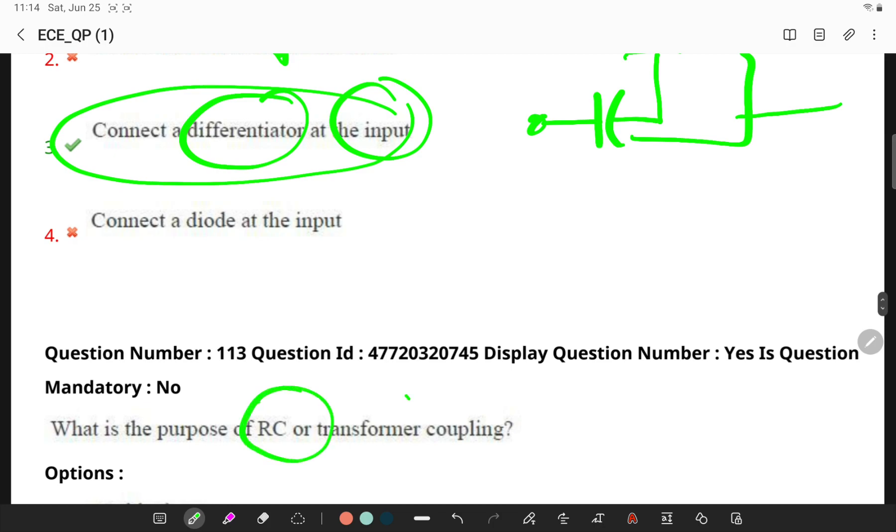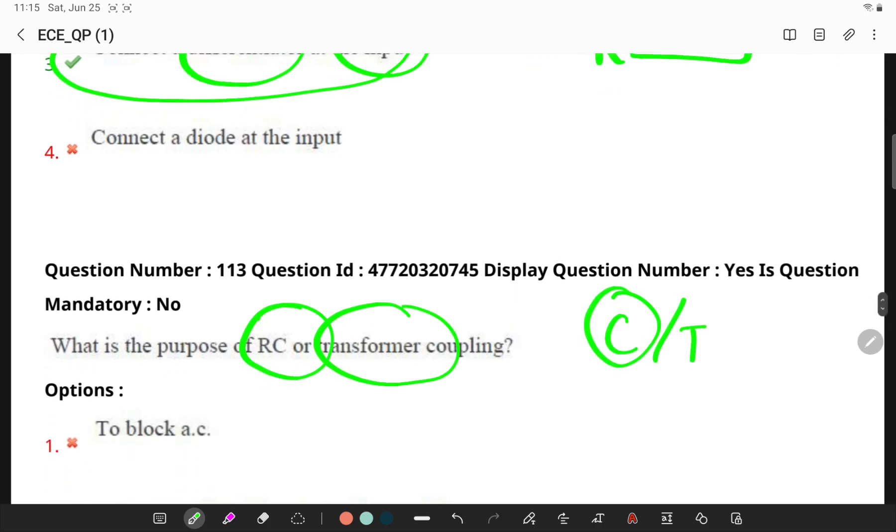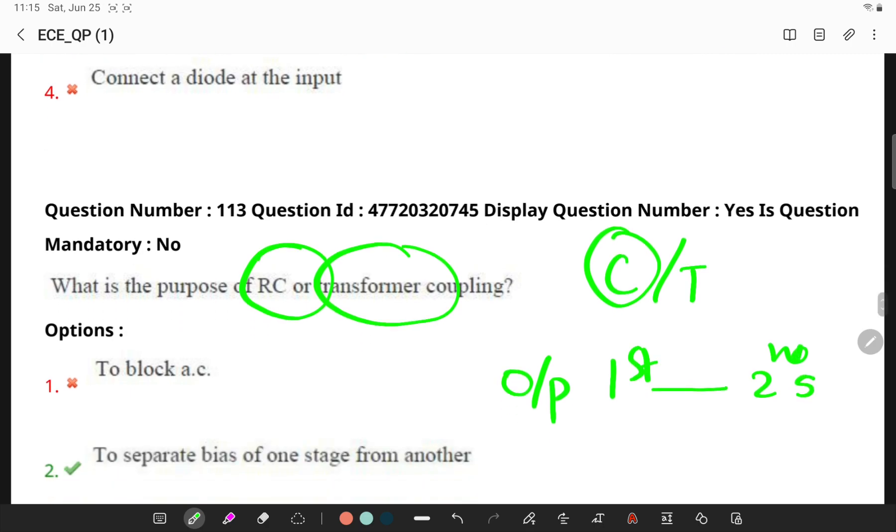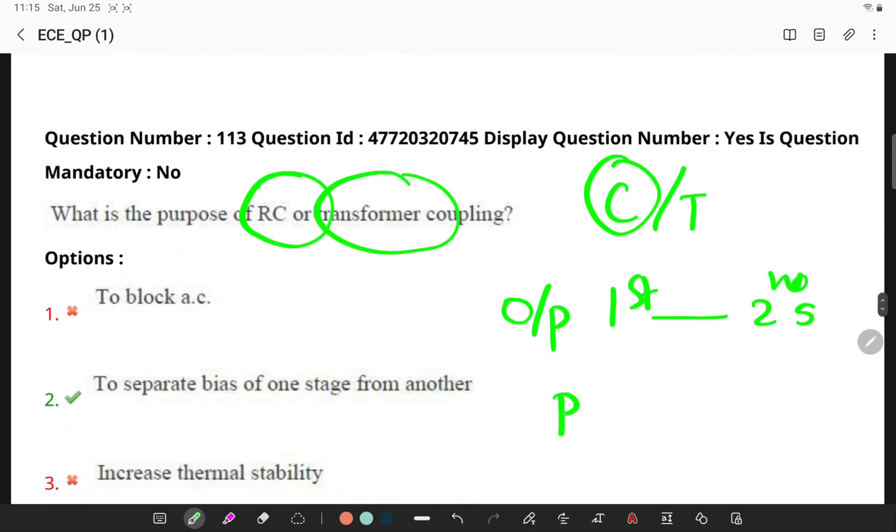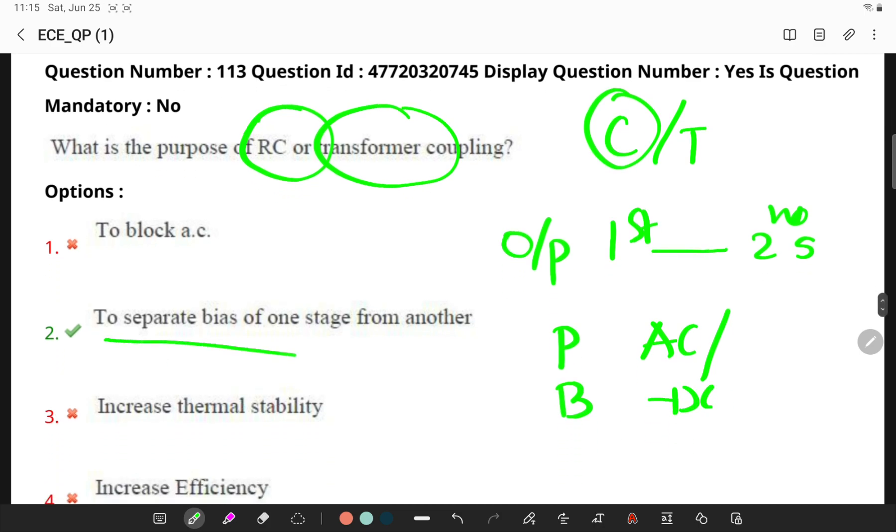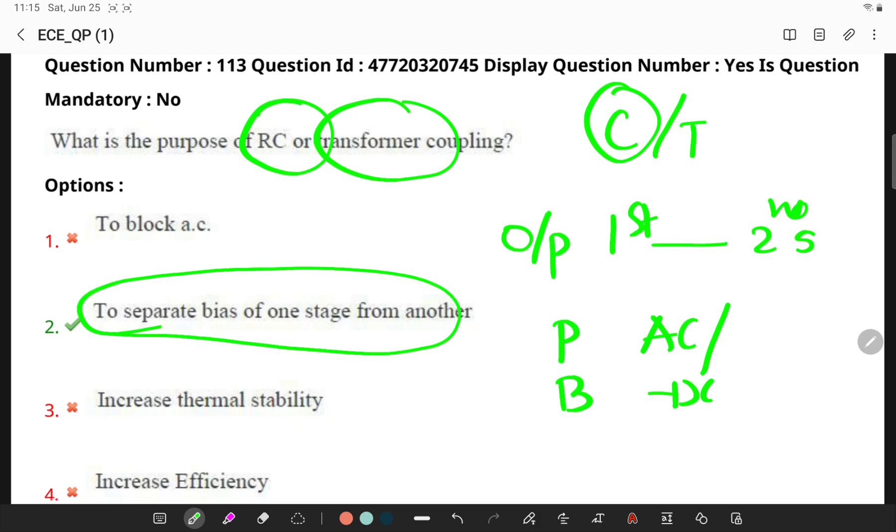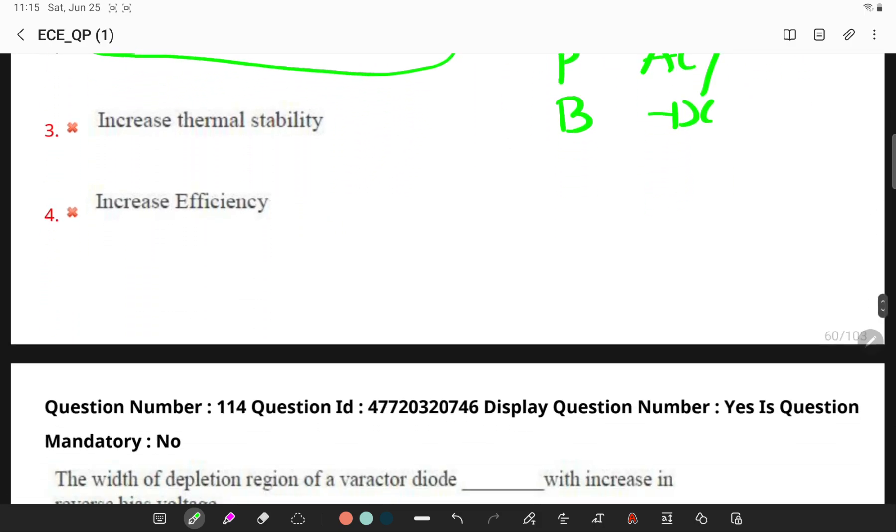Next, what is the purpose of RC or transformer coupling? In RC or transformer coupling, a capacitor or transformer is used as a coupling device which connects output of the first stage to the input of the second stage and its function is to pass AC signal and to block DC bias voltage. It separates bias of one stage from another.